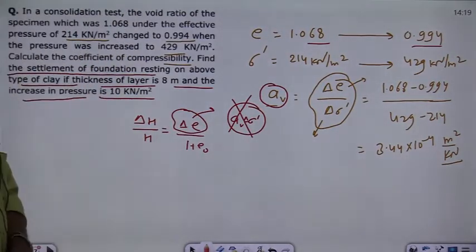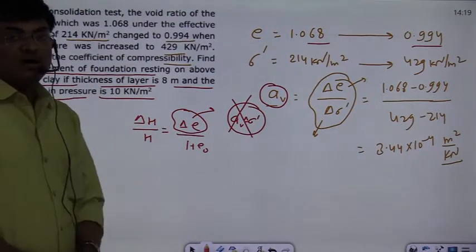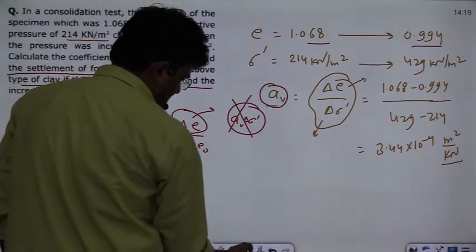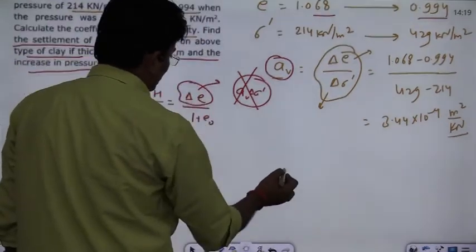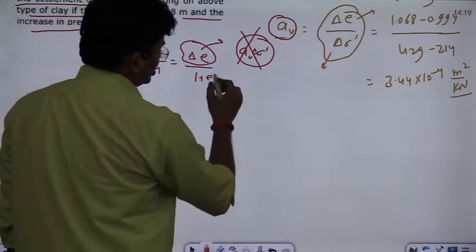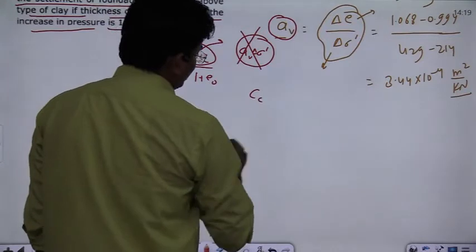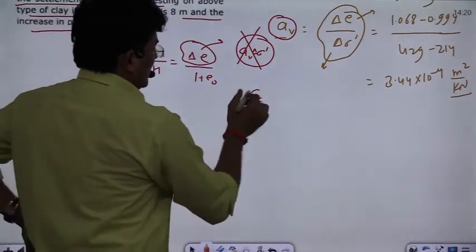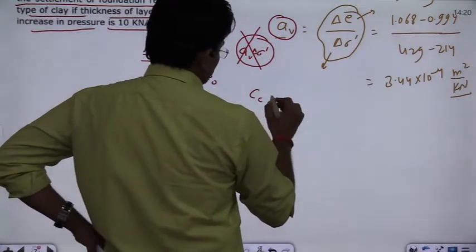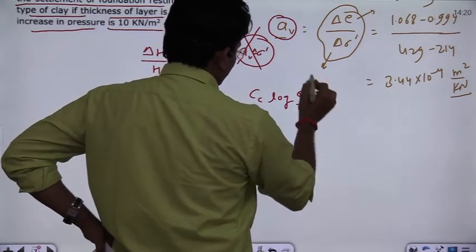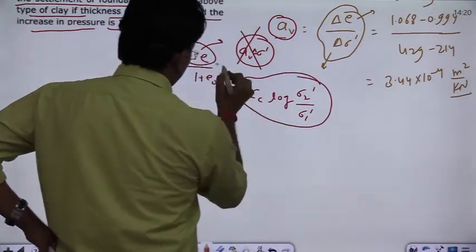I have told you that the parameter used here, the coefficient used for delta E's definition will be the coefficient of compression and the compression index. So, CC multiplied by log of sigma 2 dash divided by sigma 1 dash. You have to use this for delta E.